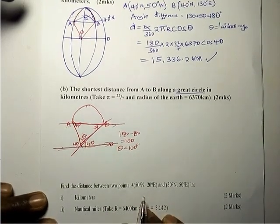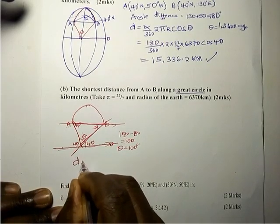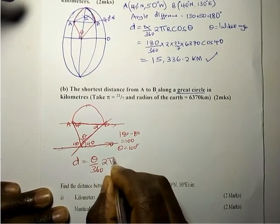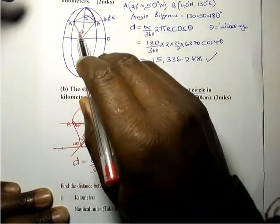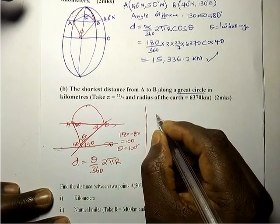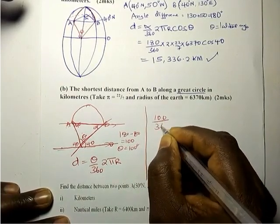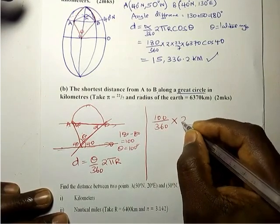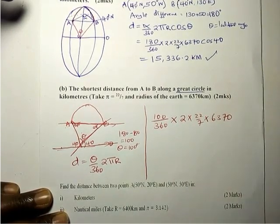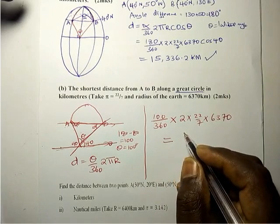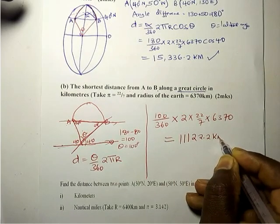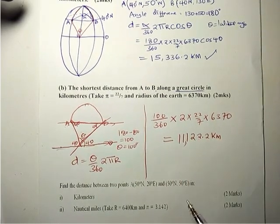Now our distance along the great circle is given by: (θ / 360) × 2πr. Since it is along a great circle: (100 / 360) × 2 × (22/7) × 6370. That gives us 11,122.2 kilometers. And we are done.